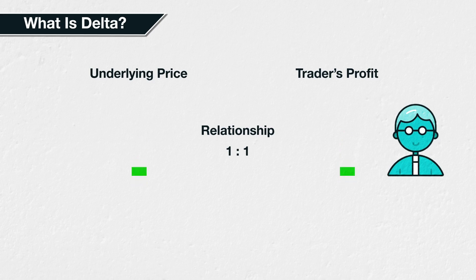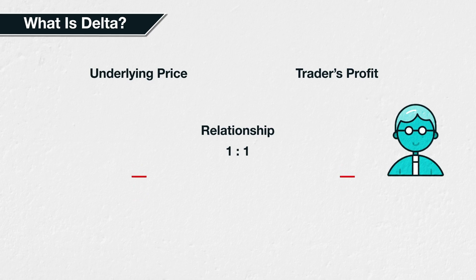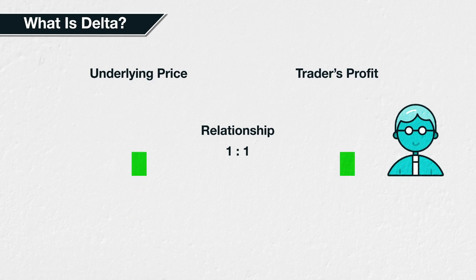If you instead purchase 10 Bitcoin and the price of Bitcoin subsequently decreases by $2,000, you've made a loss of $20,000, calculated as 10 times minus $2,000. This means that for every $1 decrease in the underlying price, you have made a $10 loss, or a $1 loss for every Bitcoin that you purchased.